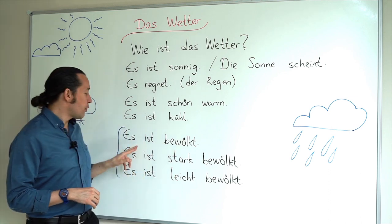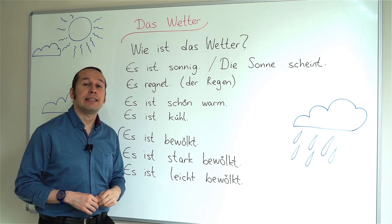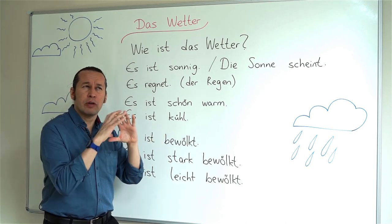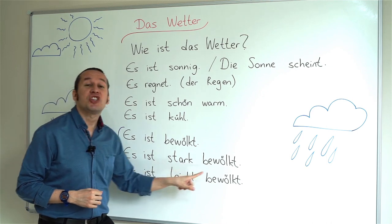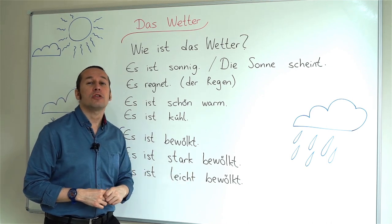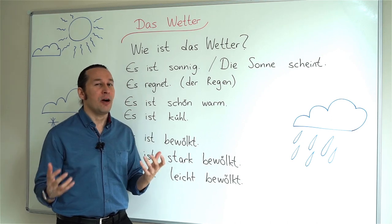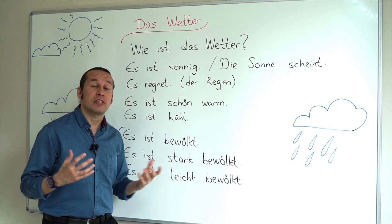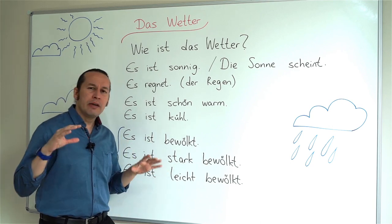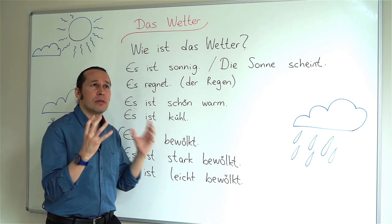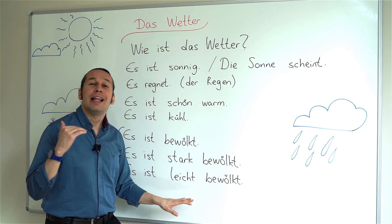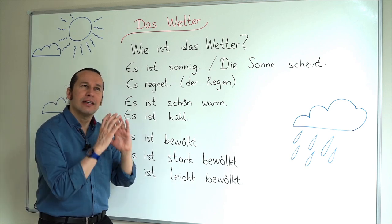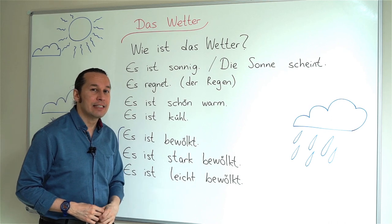If I say it is cloudy, I will say 'Es ist bewölkt.' If it's very cloudy, too many clouds, then I'll say 'Es ist stark bewölkt.' 'Stark' stands for strong — it's strongly, or very, cloudy. But if there are not that many clouds, I'll say 'Es ist leicht bewölkt.' 'Leicht' stands for light, so it's not that much cloud.